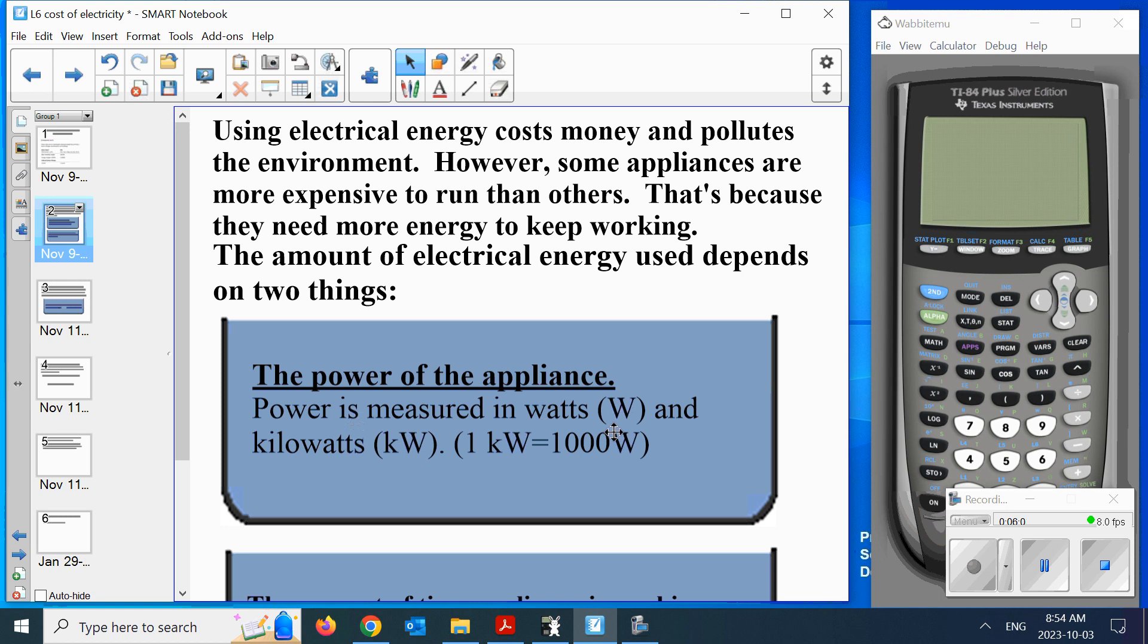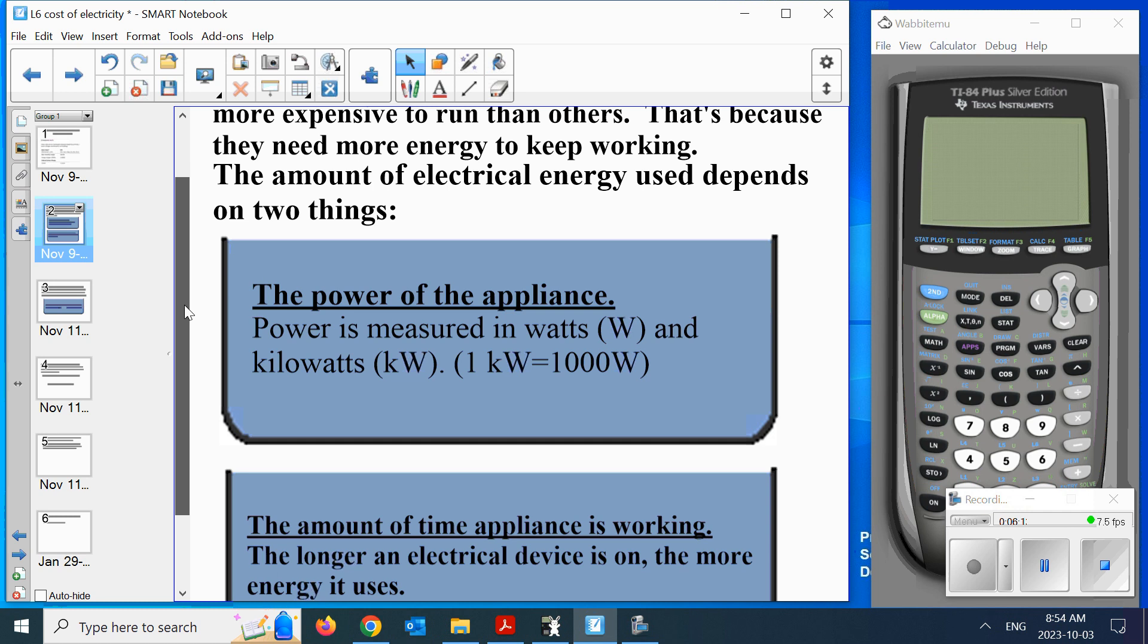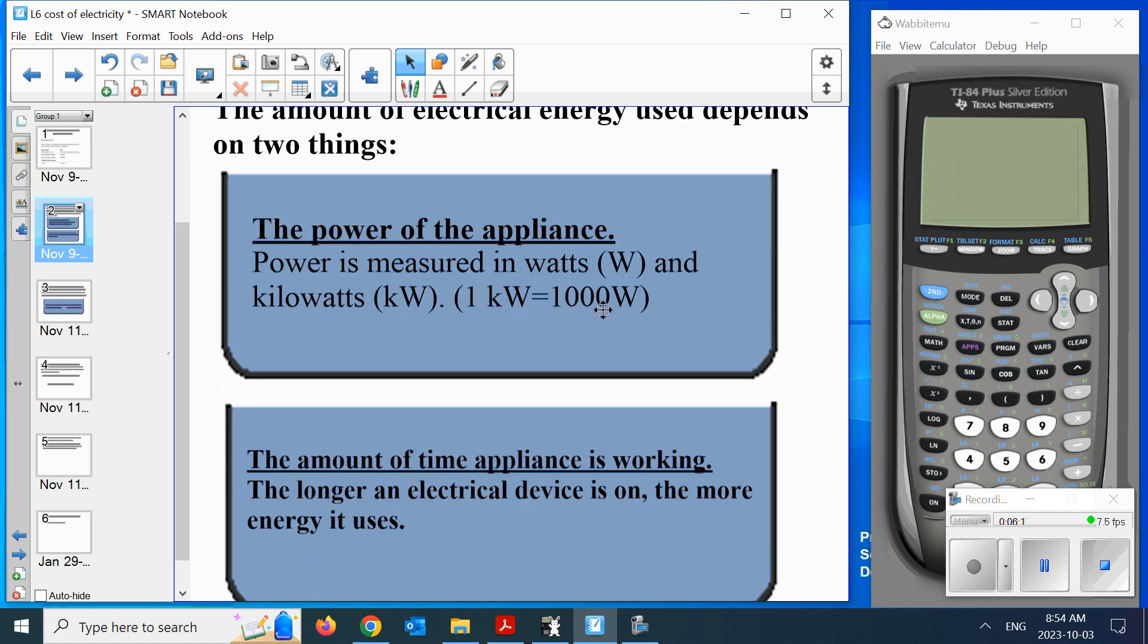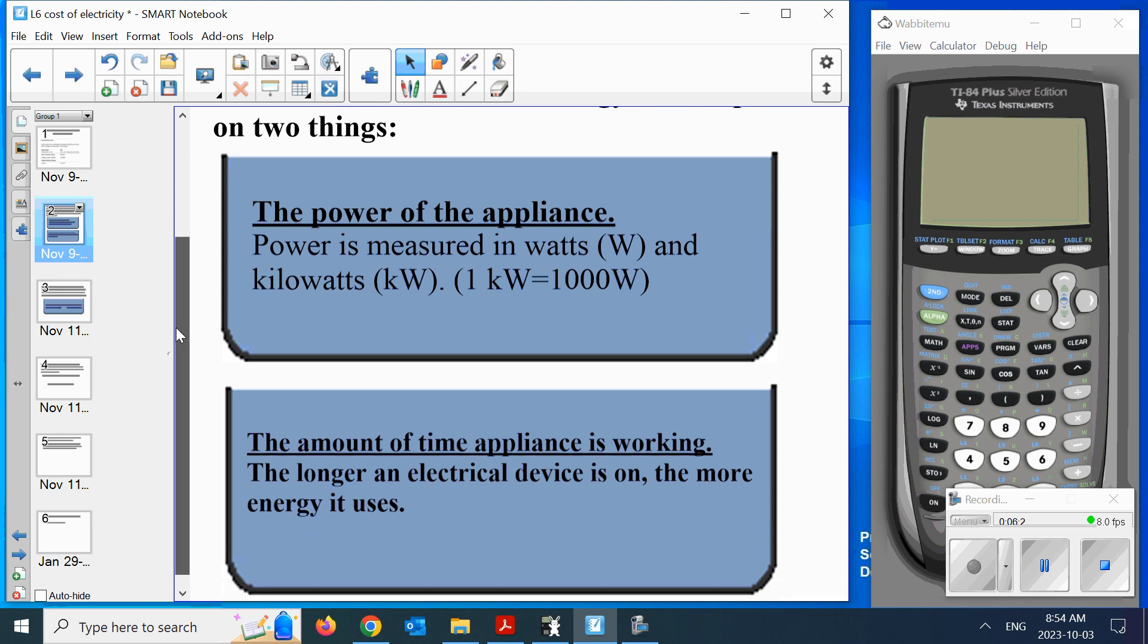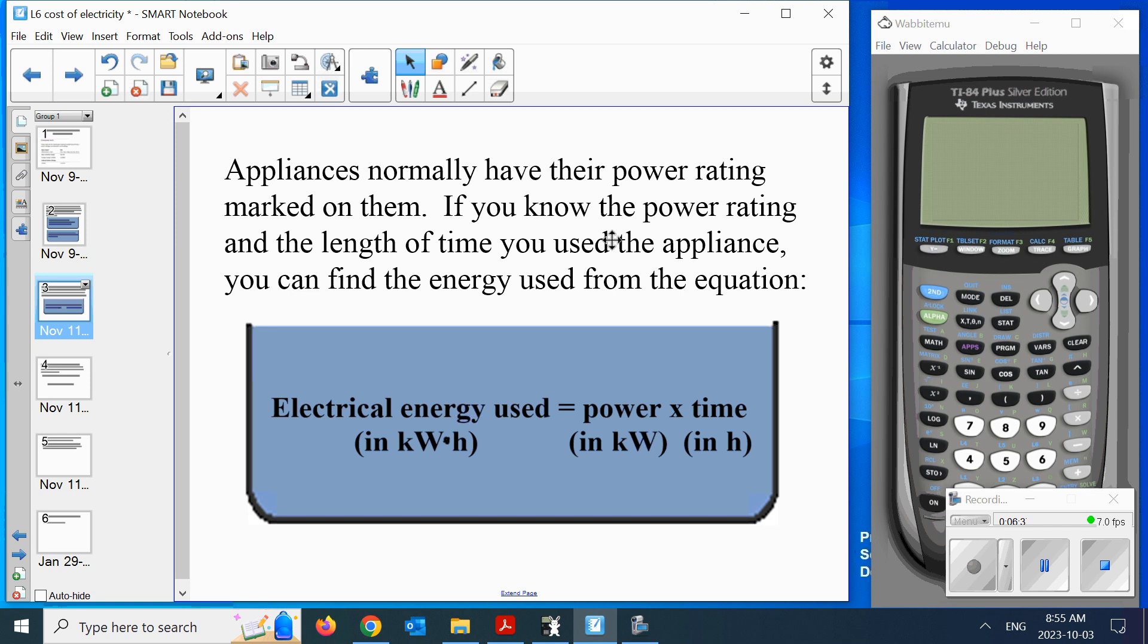Now, power is actually measured in something called watts, and I think you've all heard of watts. Still don't know what they are. Well, it's the amount of energy per second that that's possibly using. And kilowatt, just like meters and kilometers, 1,000. A kilo means 1,000. One kilowatt is 1,000 watts. The amount of electrical energy used is dependent on how long it's actually used. The longer it is, the more time it uses. I told you not to copy this out. Just consider this. Appliances normally have power ratings marked on them. If you know the power rating and length of time used, you can find the energy from this equation. This, I want you to write down. Electrical energy used equals power times time, and put the unit underneath.